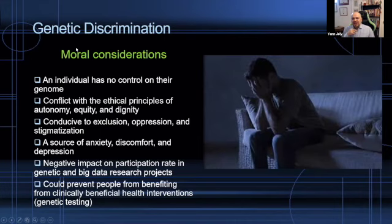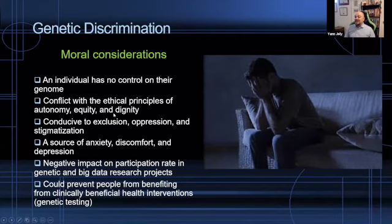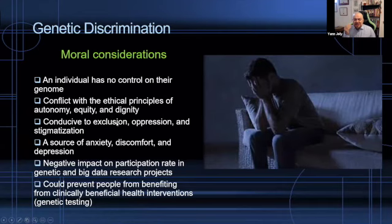But why is genetic discrimination perceived as a problem? First of all, because individuals have no control over their own genetic material. Also, because it is perceived to conflict with principles of autonomy, equity, and more importantly, even dignity. People have no control over their genome, and they might not want to share that information with third parties such as employers or insurers.